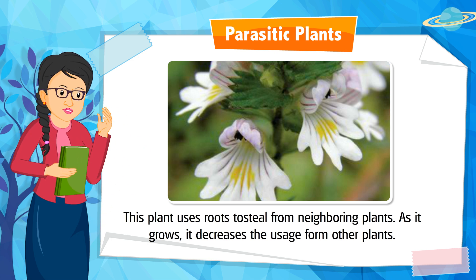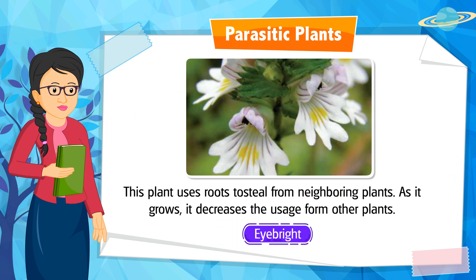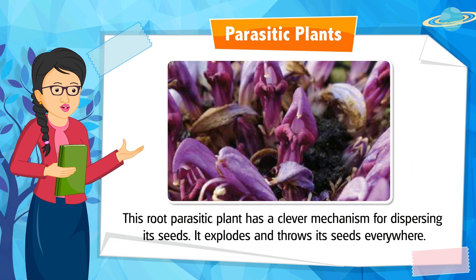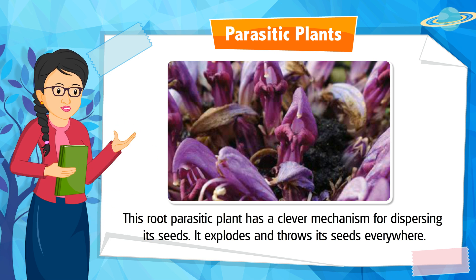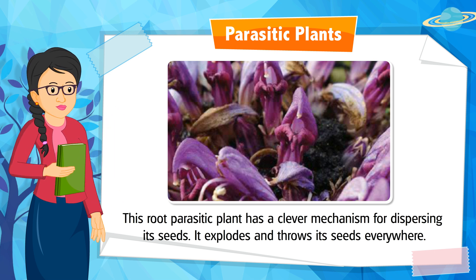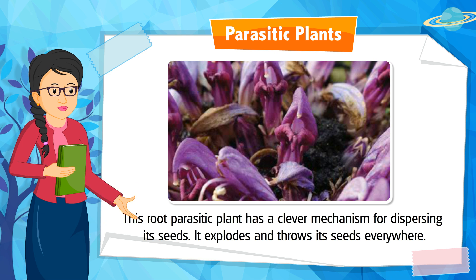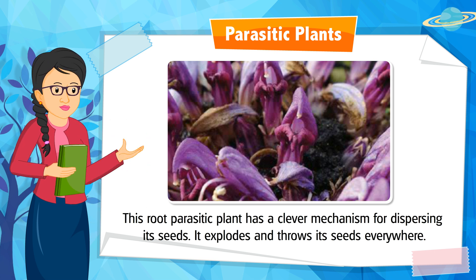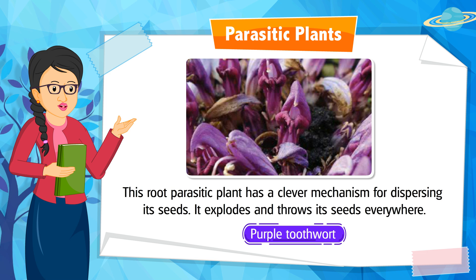This plant uses roots to steal from neighboring plants. As it grows, it decreases the nutrient usage of other plants. It is Eyebright. This shoot-parasitic plant has a clever mechanism for dispersing its seeds — it explodes and throws its seeds everywhere. It is Purple Toothwort.